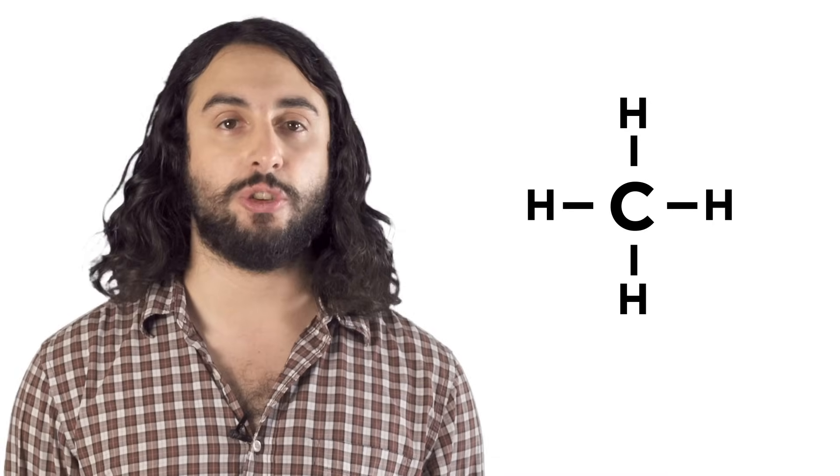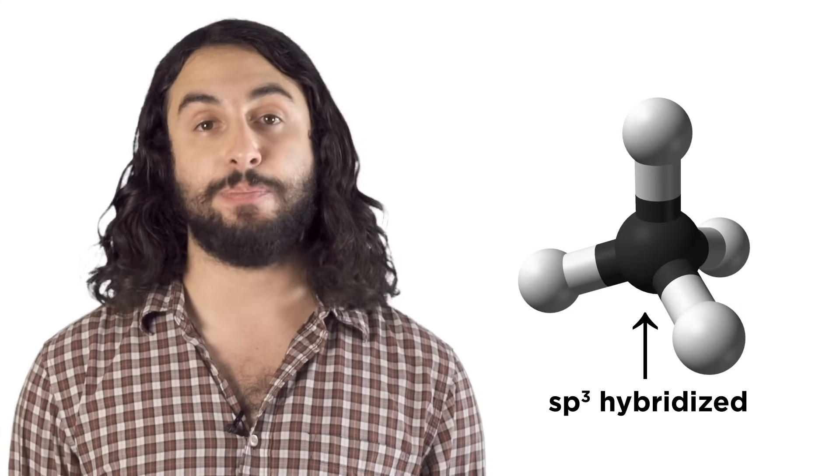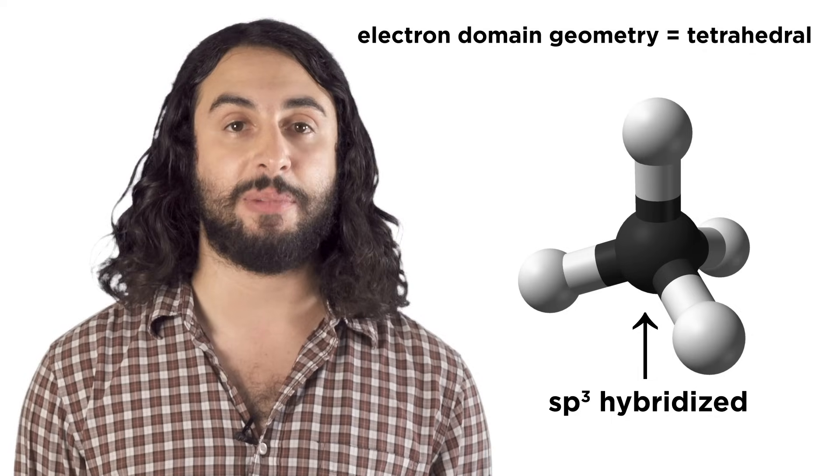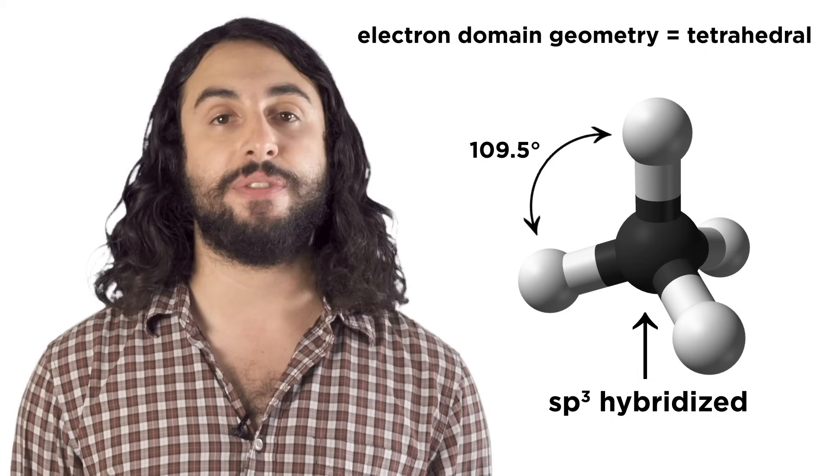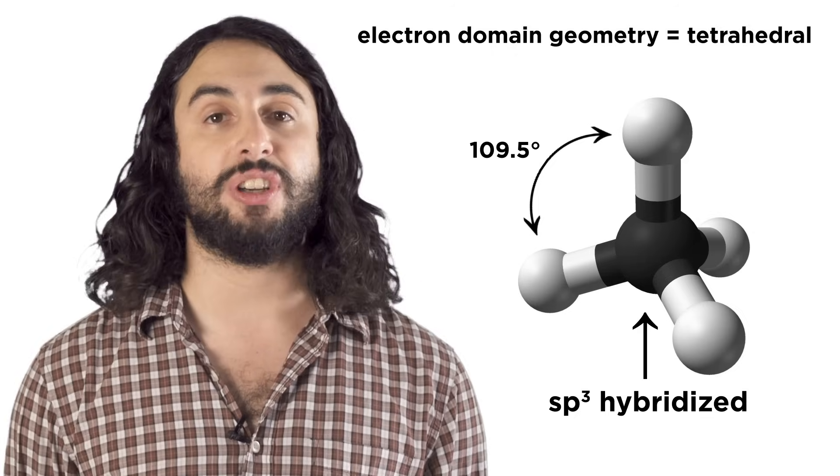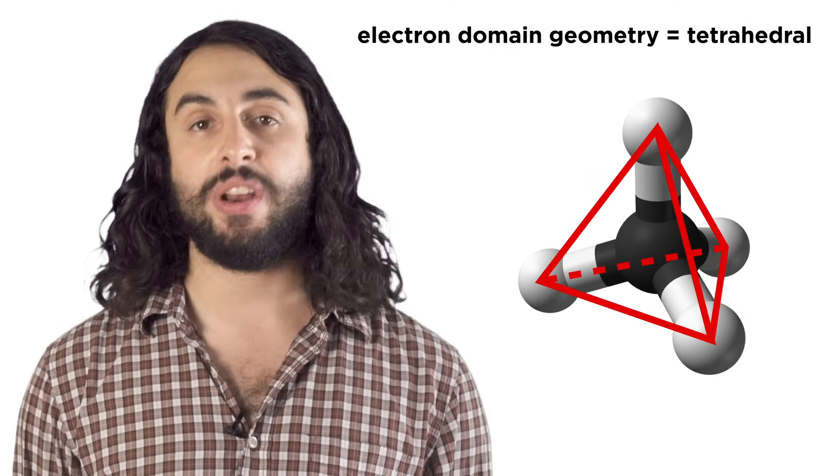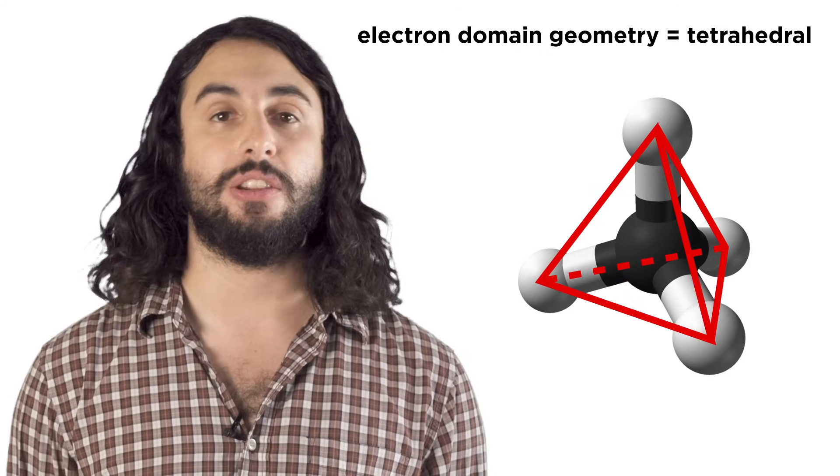Once we get to four electron domains around a central atom, we will need to utilize the third dimension. The carbon in methane is sp3 hybridized, so it has tetrahedral electron domain geometry. These 109.5 degree bond angles put the hydrogens as far away from each other as they can be, making a shape that would have four sides if we connected the points.